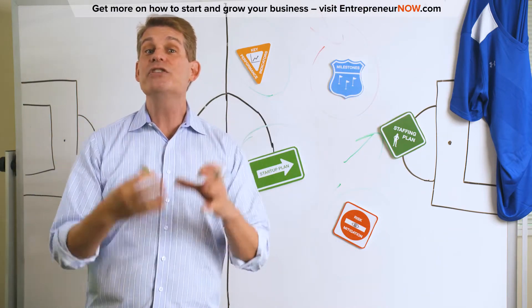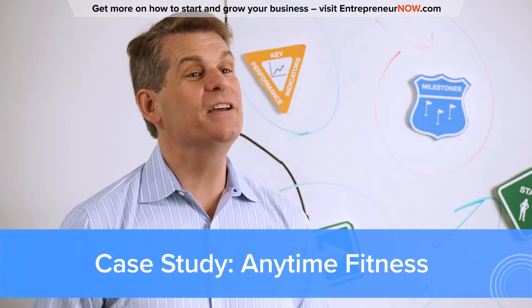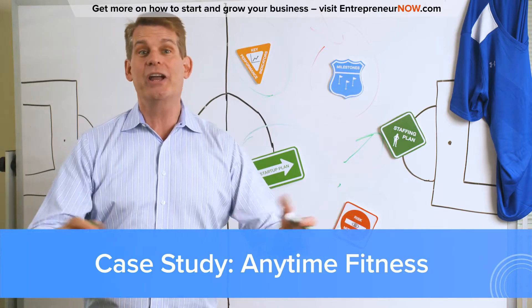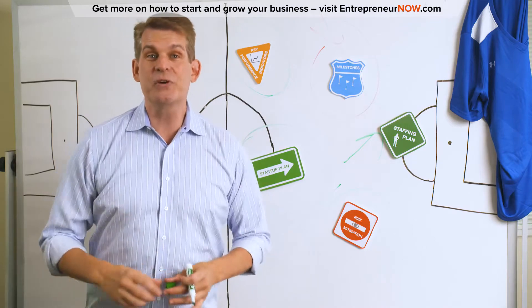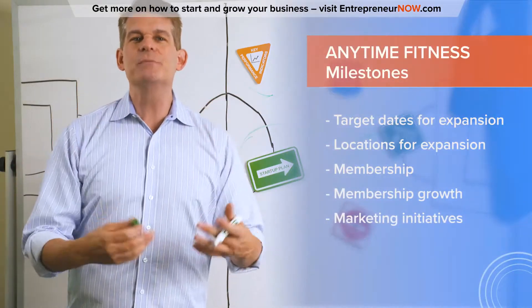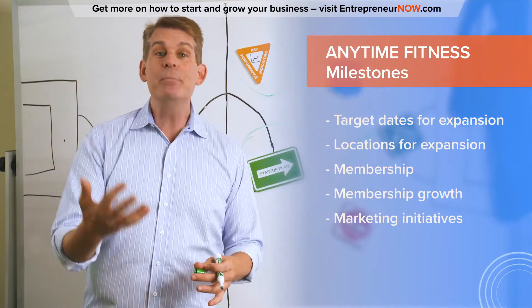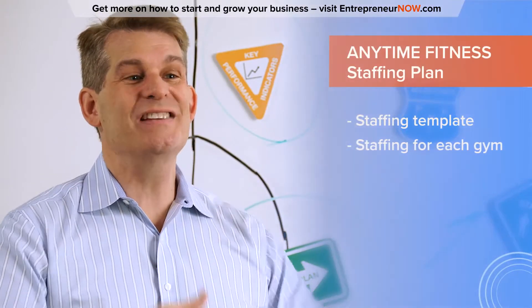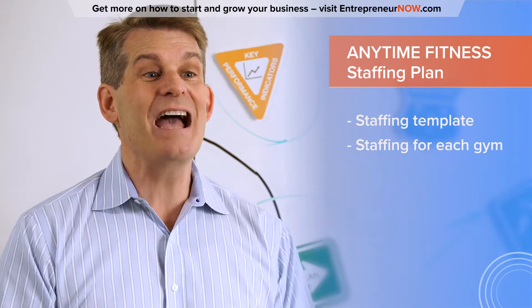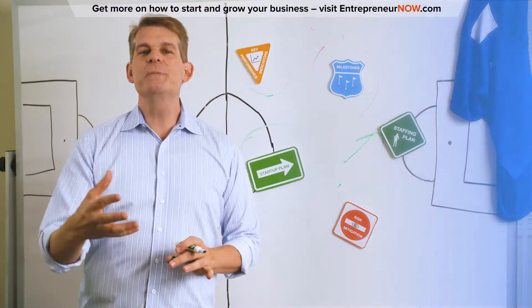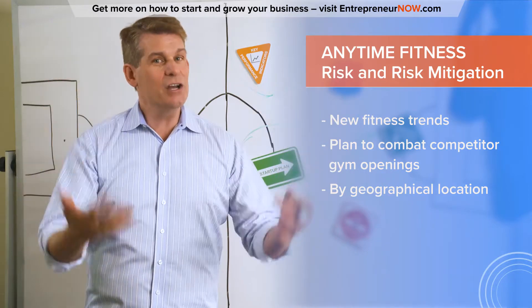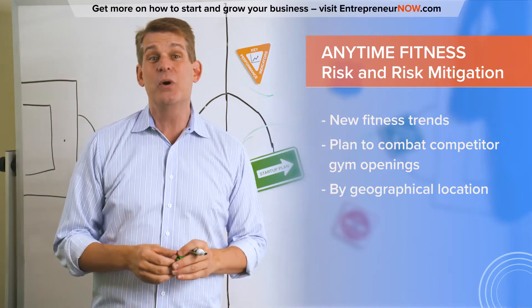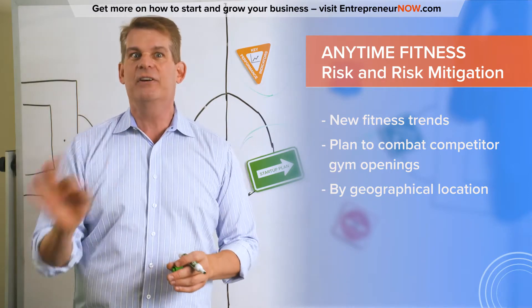Let's look at how this works with a real example — Anytime Fitness, a 24/7 gym that sells convenience. For milestones, they'd look at target dates for expansion by state, membership growth, and major marketing initiatives. For their staffing plan, a staffing template for each gym makes sense since they're franchises and fairly standardized. For risk and risk mitigation, they need to address the fact that they're in a mature, competitive market — facing yoga studios, indoor cycling, rock climbing, and other gyms — and articulate clearly how they're going to combat that.